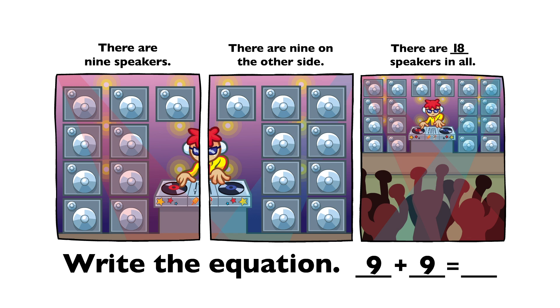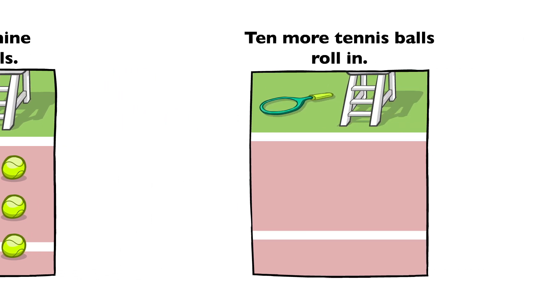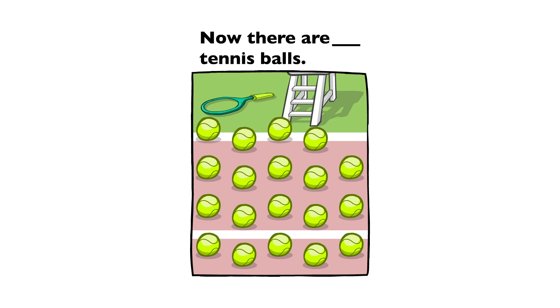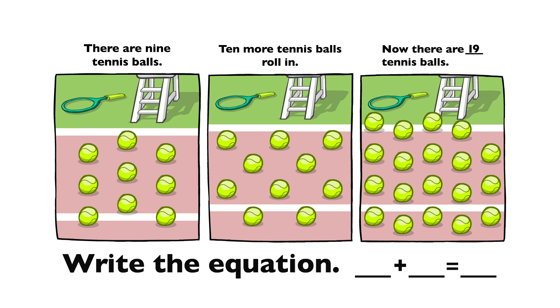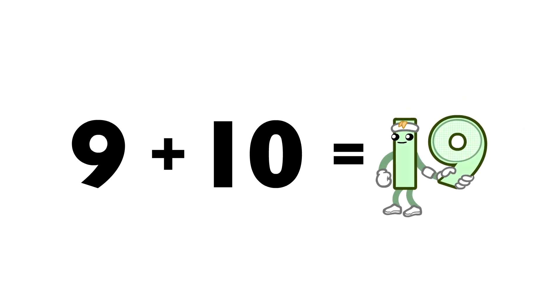9 plus 9 equals 18. There are 9 tennis balls. 10 more tennis balls roll in. Now there are 19 tennis balls. 9 plus 10 equals 19.